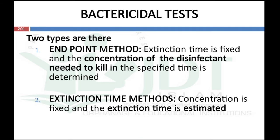Bactericidal tests can be done by either endpoint method or extinction time method. In the endpoint method, extinction time is fixed and the concentration of disinfectant needed to kill in a specified time is determined. In the extinction time method, concentration is fixed and extinction time is estimated.